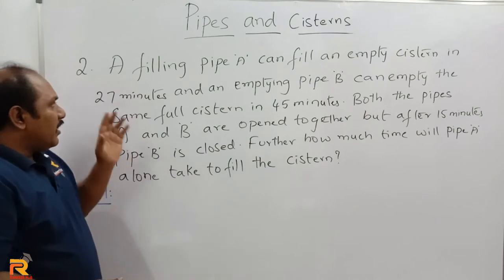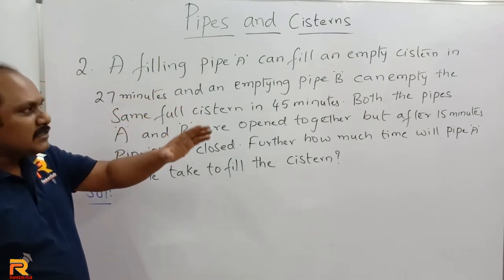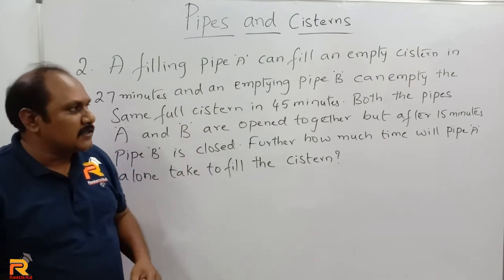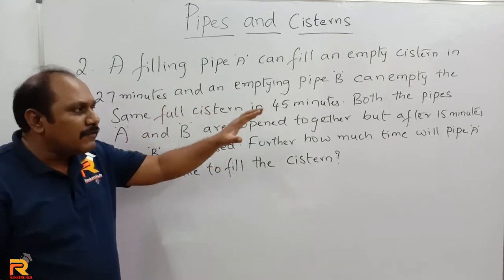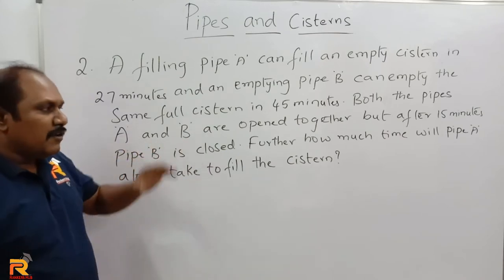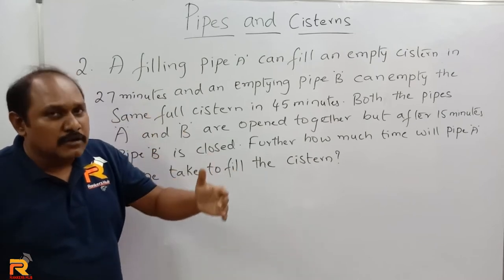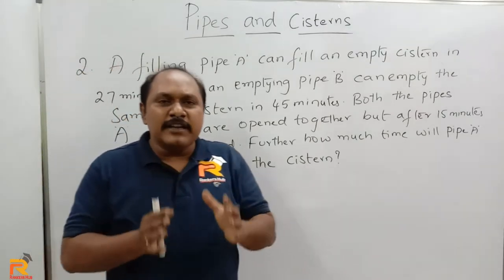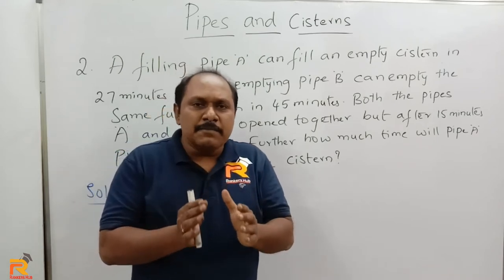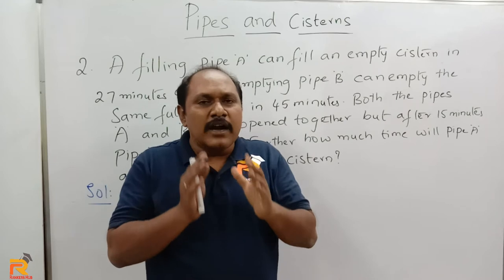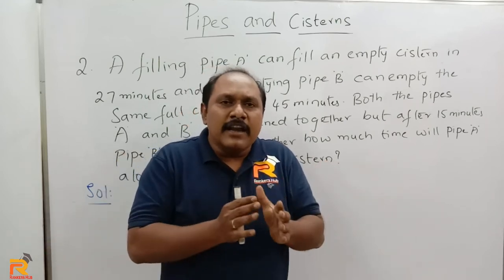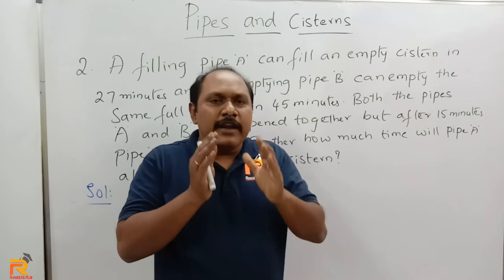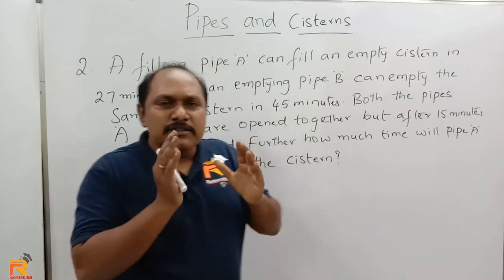Now let us look into the second question. A filling pipe A can fill an empty cistern in 27 minutes, and an emptying pipe B can empty the same full cistern in 45 minutes. Both pipes A and B are opened together, but after 15 minutes pipe B is closed. Further — from the moment pipe B is closed — how much time will pipe A alone take to fill the cistern? To answer this, you must know a concept called LCM, which is helpful for almost all chapters related to quantitative aptitude.